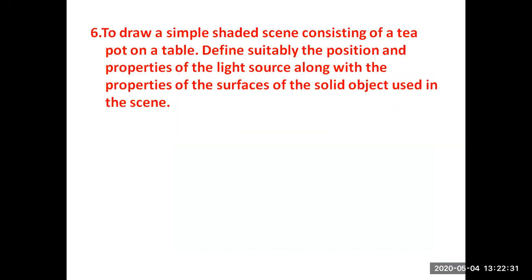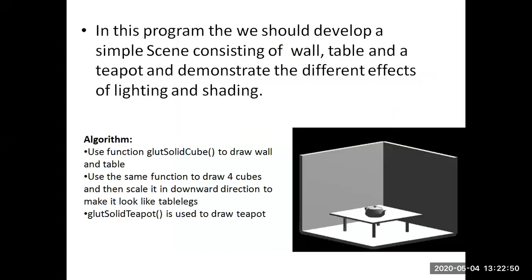Today we will understand the teapot program — how to draw a simple shaded scene consisting of a teapot on a table, define suitably the position and properties of the light source along with the property of the surface of the solid object used in the scene. In this program, we should develop a simple scene consisting of a wall, table, and a teapot, and demonstrate the different effects of lighting and shading.